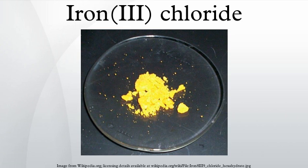Reducing agents such as hydrazine convert iron chloride to complexes of iron. In industrial applications, iron chloride is used in sewage treatment and drinking water production. In this application, FeCl3 in slightly basic water reacts with the hydroxide ion to form a floc of iron hydroxide.